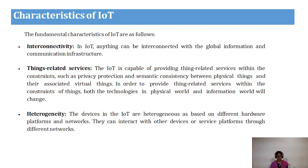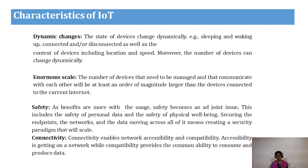Heterogeneity means IoT can be based on or work on any hardware platforms and networks, and can interconnect or interact with other devices or service platforms through different networks. Dynamic changes: the state of devices changes dynamically — for example, walking, sleeping, connected or disconnected — as well as the context of devices, including speed and location, and the number of devices can also change dynamically.